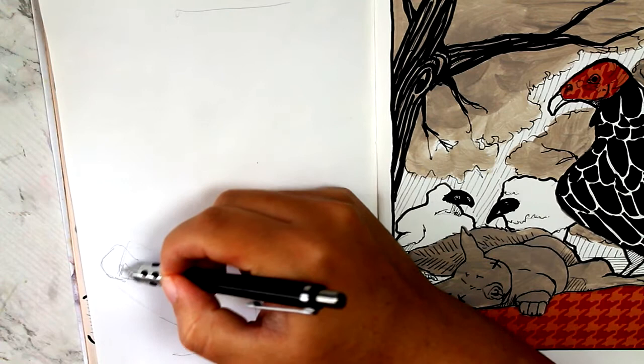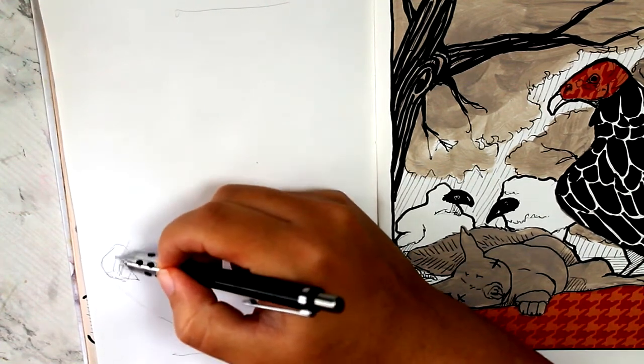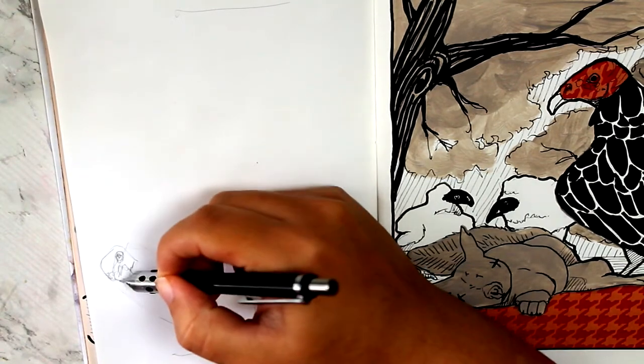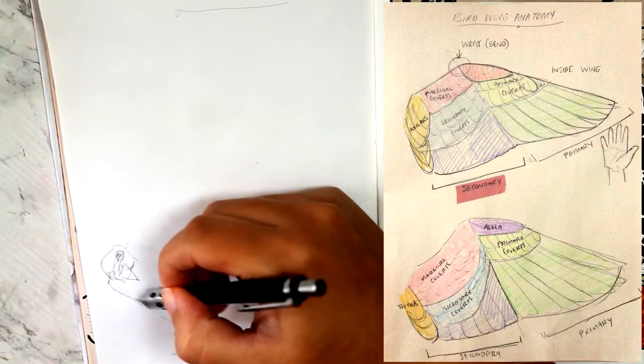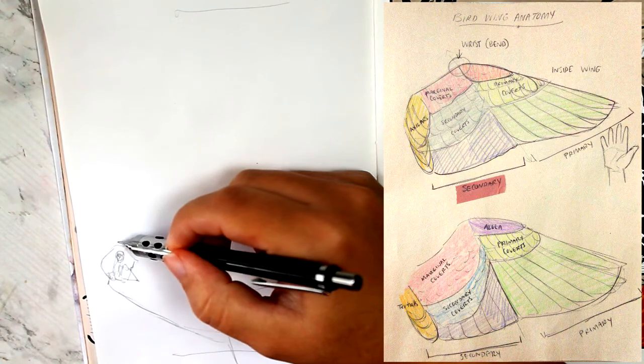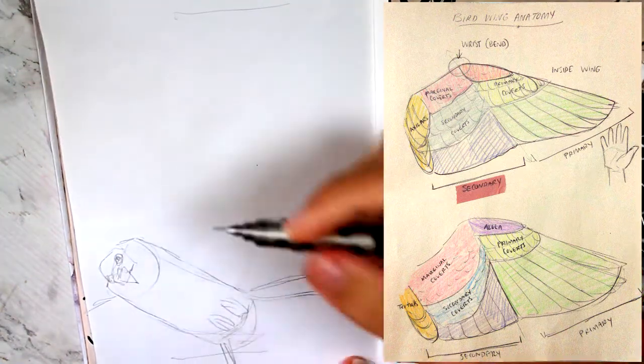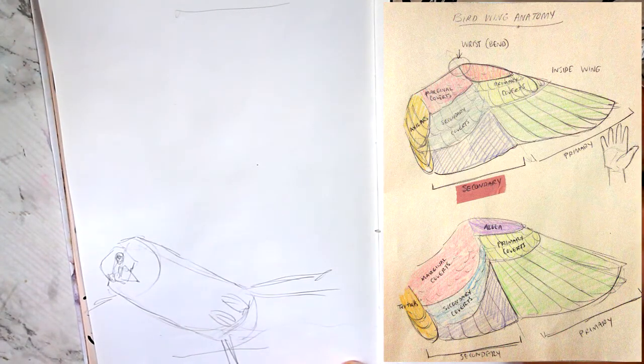I'm going to draw one of his wings using the reference but also using the anatomy diagram that I drew, and I'll put it up on the screen. Here's my simplified attempt at a body here because I'm not really worried about that right now. I just need a place to attach my wing.